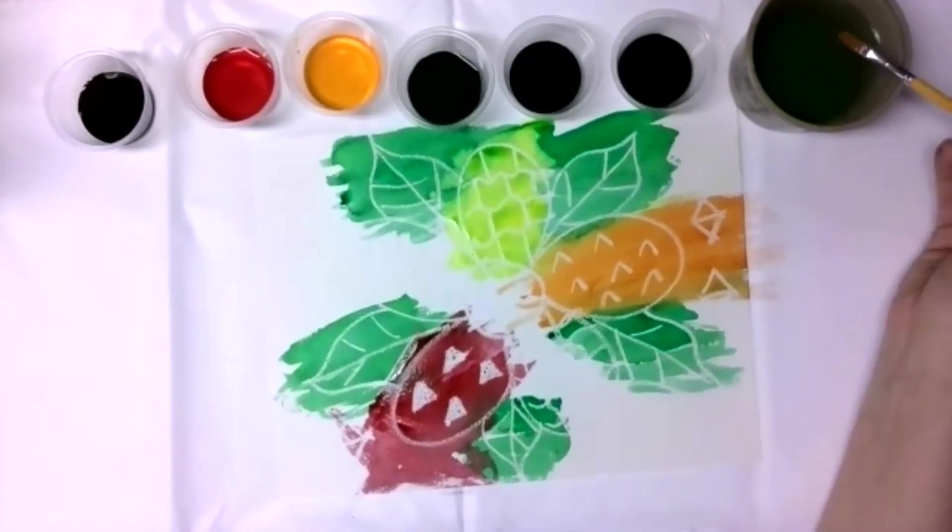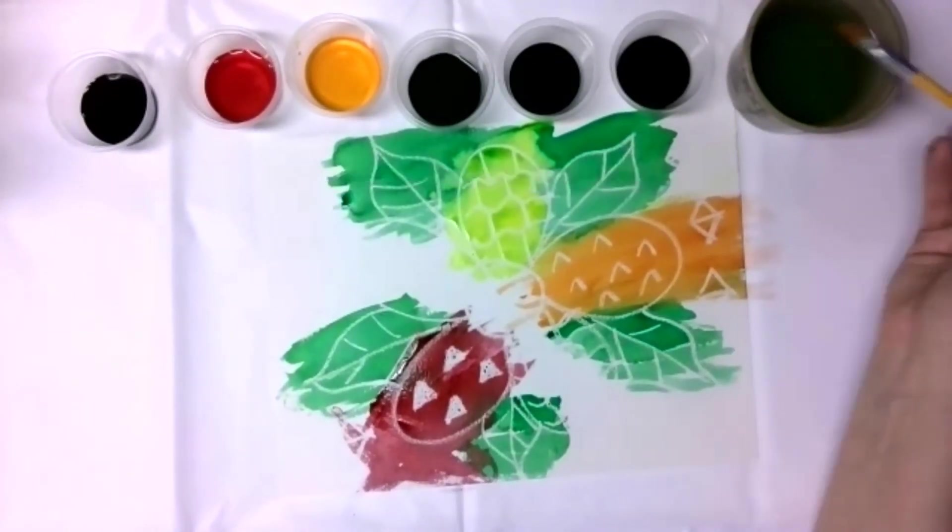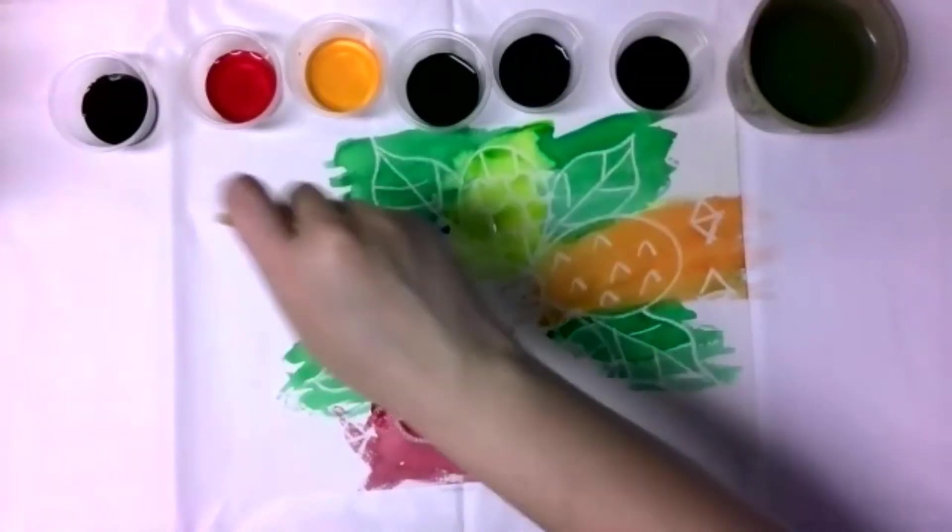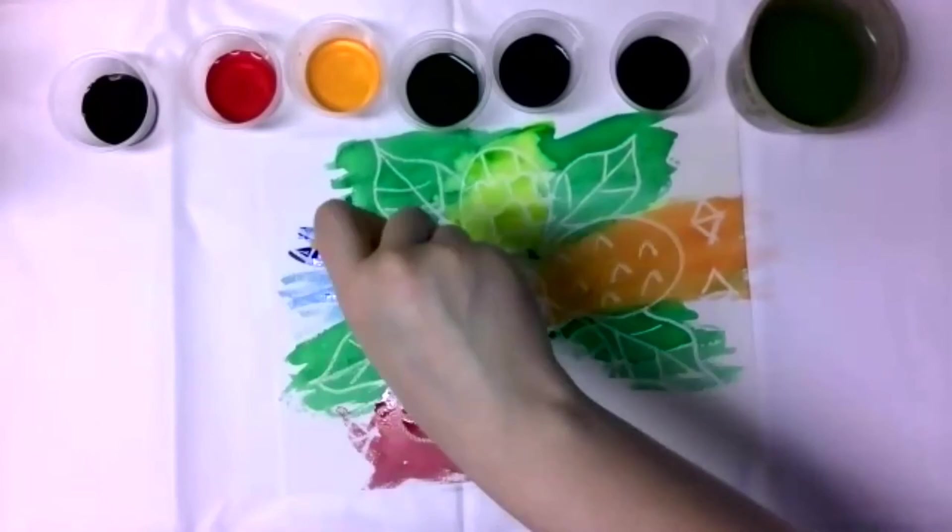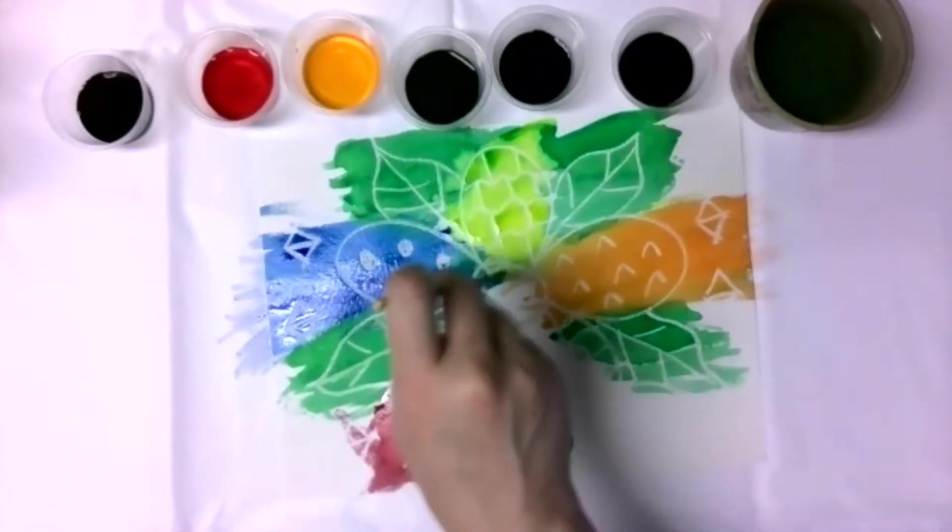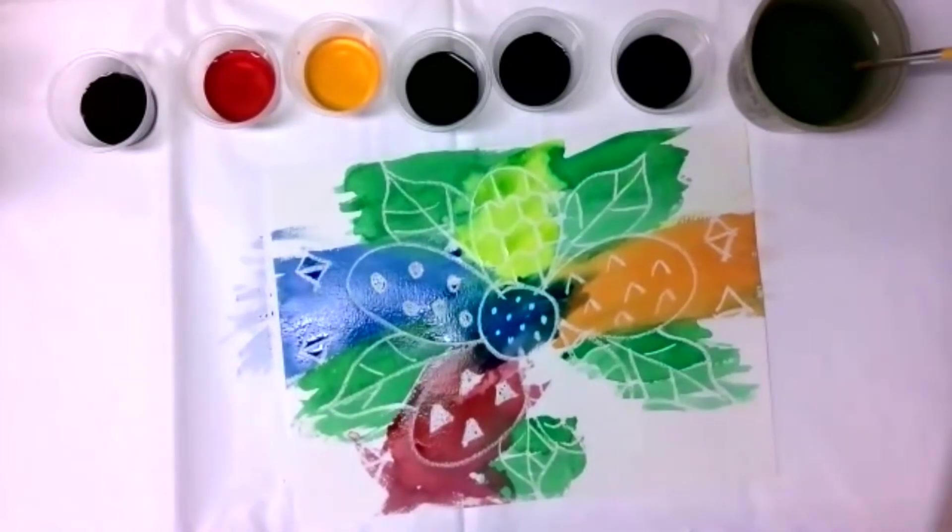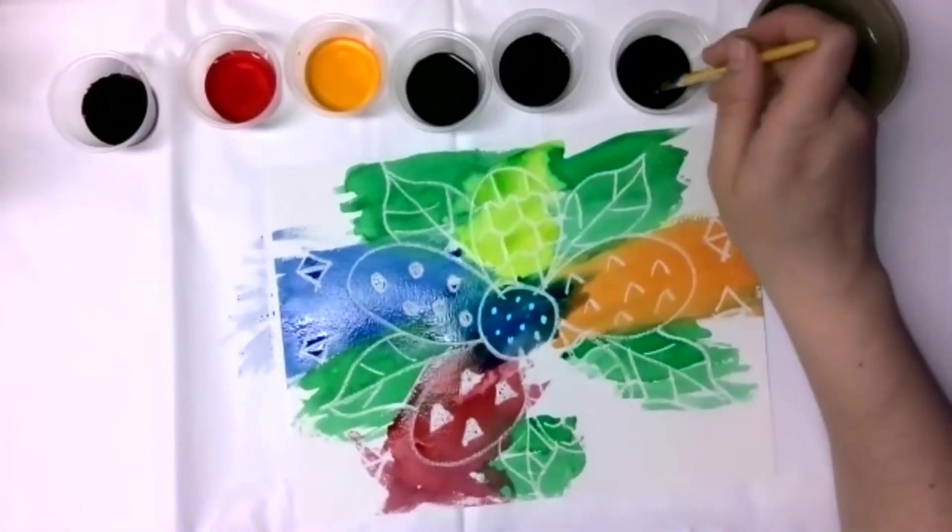So we have done four out of our six colors. So now we're going to do our blue. Do our blue over here. It's looking pretty cool so far. And then our final petal will be our purple.